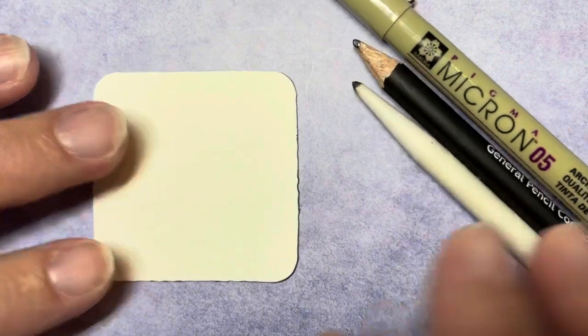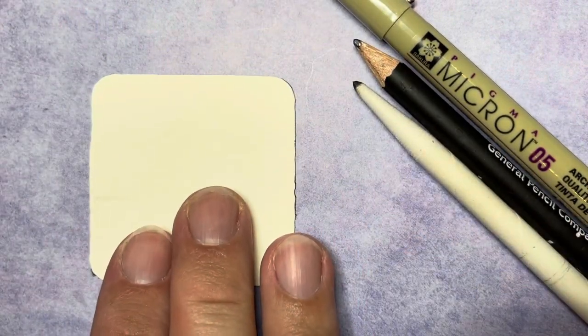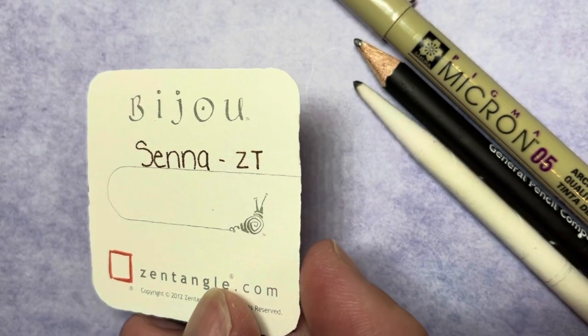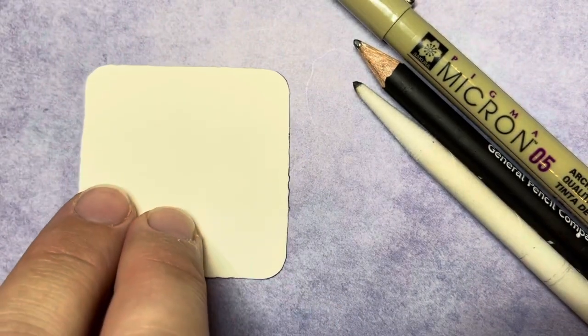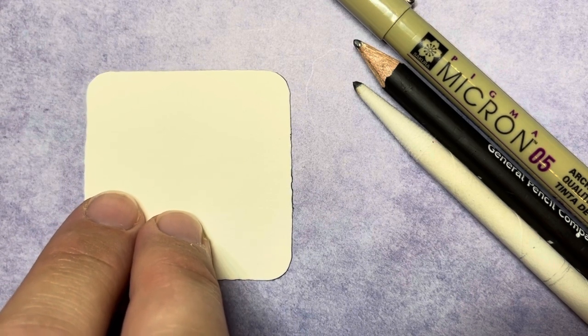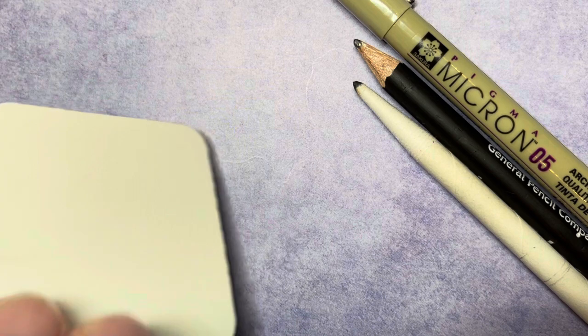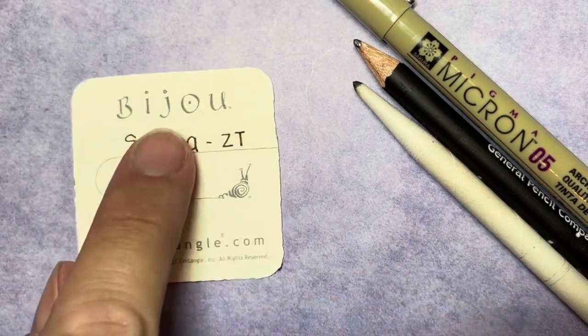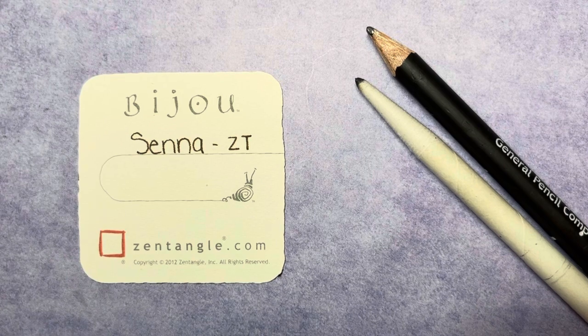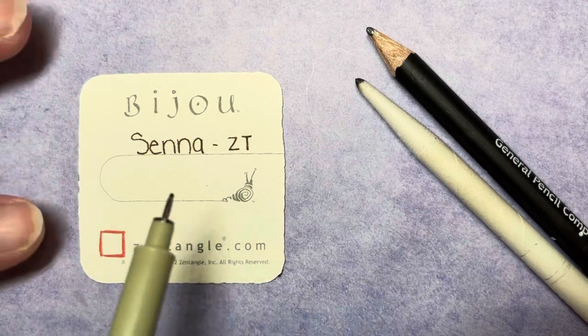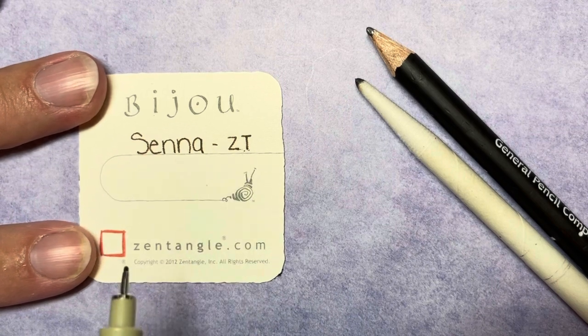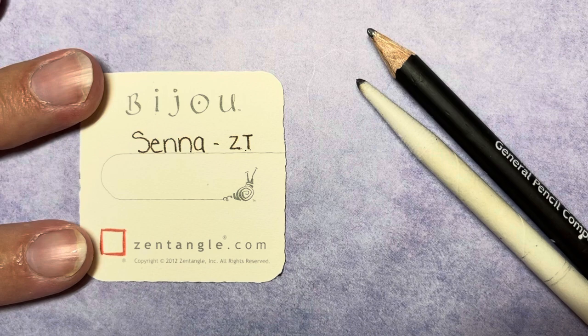All right I also have a two inch by two inch square tile I'm working on. This is a Zentangle brand tile called the Bijou Tile. You can draw on whatever you have but I recommend making a small square to work in. All right to get started on the back I always write the name of the tangle we are working on. So today we are working on Senna and I just put the ZT because it is a Zentangle created tangle.